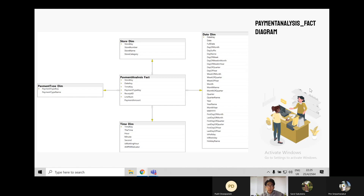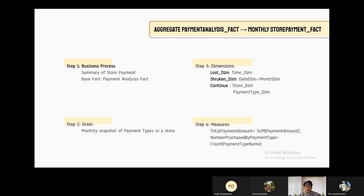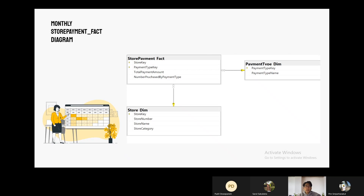Here is the diagram of payment analysis fact. This fact is an aggregate table of the previous fact. We decided to aggregate because it would be useful to show the amount of each payment type and how much it is used in each store. With monthly aggregation, the grain becomes a monthly snapshot of payment type in a store. We discard time dim because we can no longer specify the time, and we keep store dim and payment type dim. The date dim is shrunken into month dim to analyze the monthly snapshot. We measure two things: total payment amount and number purchased by payment type. Total payment amount tells how much is paid with each specific payment type, while number purchased by payment type tells how many times the payment type is used in each store. Here is the diagram of the monthly snapshot of store payment.